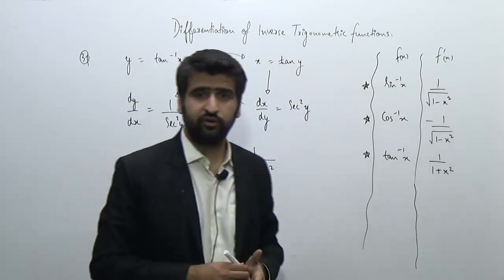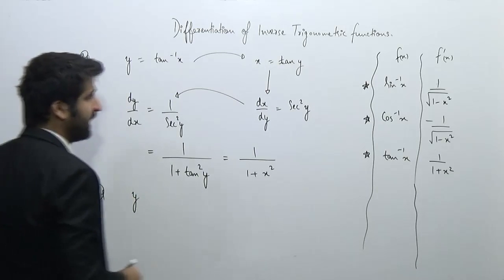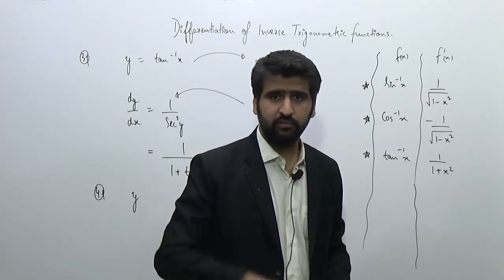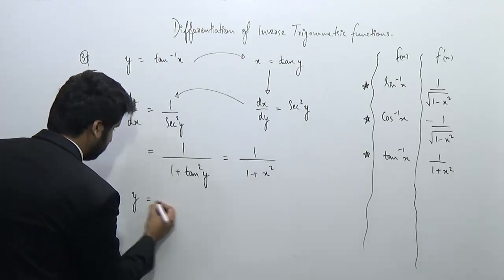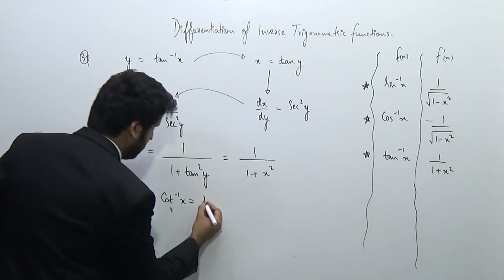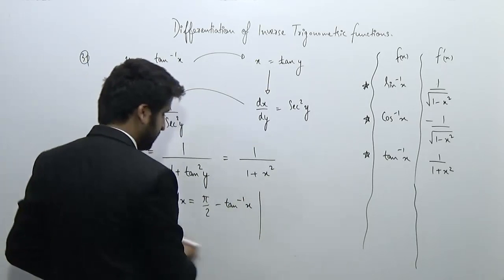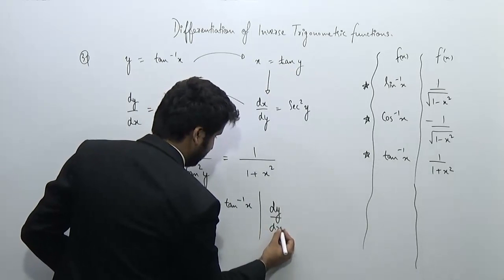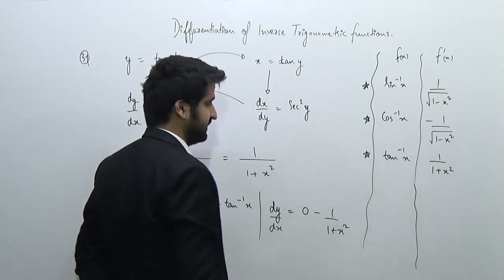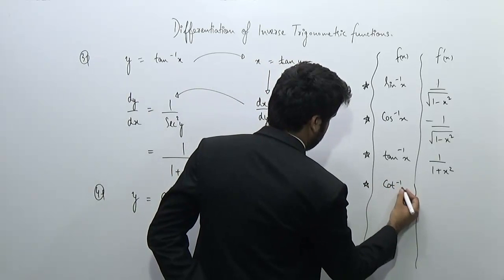We have now calculated the differentiation of sin⁻¹x, cos⁻¹x, and tan⁻¹x. For cot⁻¹x, we use the identity: cot⁻¹x = π/2 − tan⁻¹x. Differentiating gives dy/dx = 0 − 1/(1 + x²), so the differentiation of cot⁻¹x equals −1/(1 + x²).